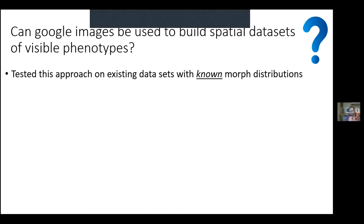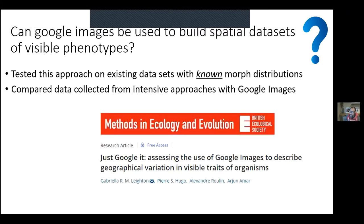To test this idea, we needed to explore whether data generated using Google Images was actually valid, because there are many reasons it might not be — wrong species label, misidentified photos, and so on. So we searched for existing datasets of known morph distributions — data where people had gone out and collected rigorously in the field — and then compared those with the same data collected using Google Images. This is the paper that resulted from that work, led by Gabrielle Layton for her honours project. I was delighted she was awarded the 2016 Robert May Prize for this paper.